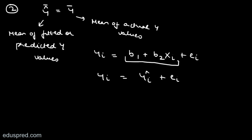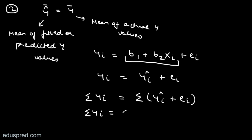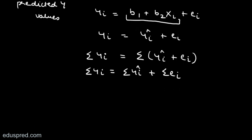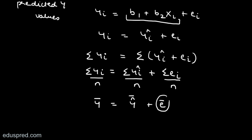Taking summation on both sides: summation yi = summation ŷi + summation ei. Dividing the entire expression by n gives summation yi over n equals summation ŷi over n plus summation ei over n, which is y-bar equals ŷ-bar plus e-bar. Since we have just shown that e-bar equals zero, this implies y-bar equals ŷ-bar.